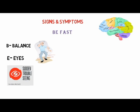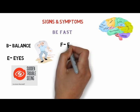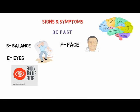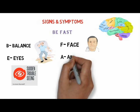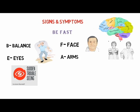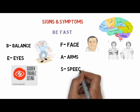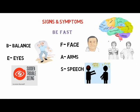E for Eyes — sudden trouble seeing out of one or both eyes. F for Face — the face may have dropped on one side; the person may not be able to smile, or their mouth or eye may have drooped. A for Arms — the person may not be able to lift both arms and keep them there because of weakness or numbness in one arm.